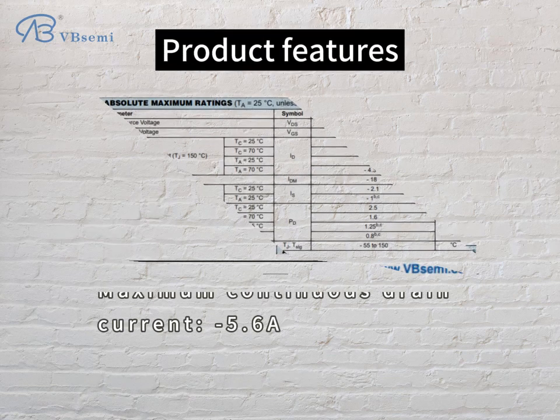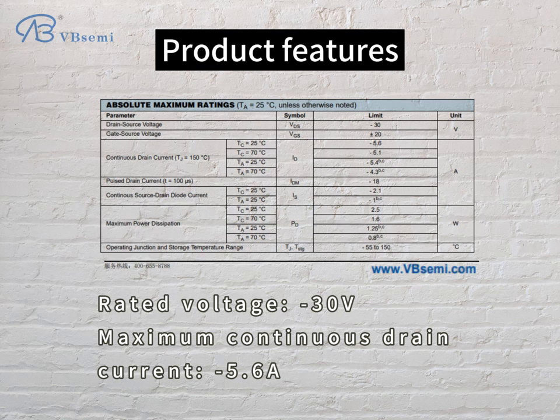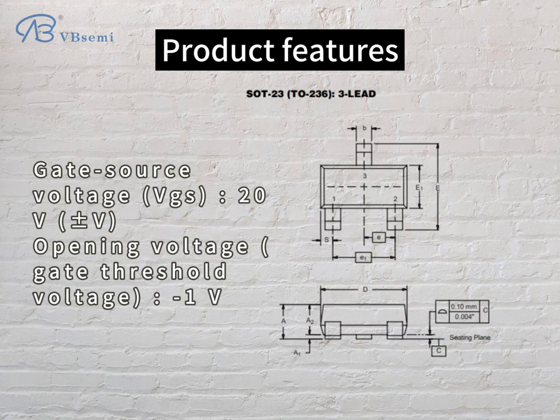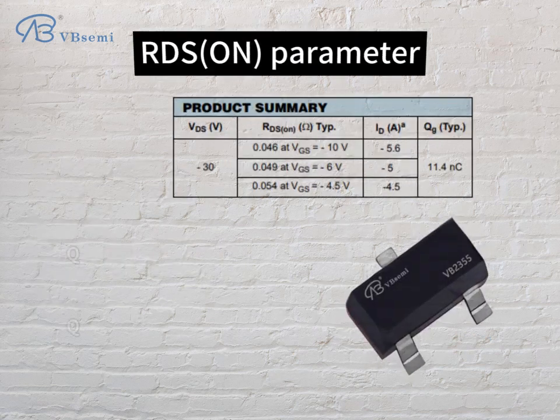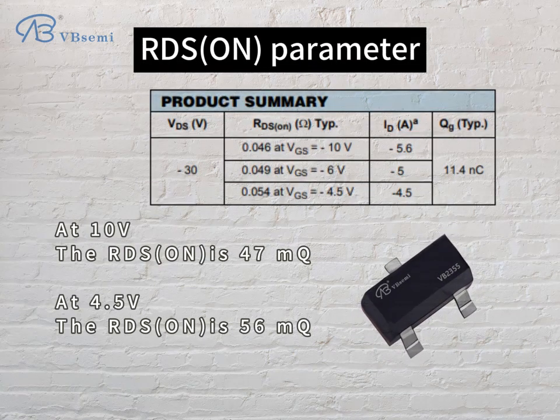Product features: rated voltage minus 30V, maximum continuous drain current minus 5.6A, gate-source voltage VGS 20V, gate threshold voltage minus 1V. RDS(on) parameters: at 10V, RDS(on) is 47 mΩ; at 4.5V, RDS(on) is 56 mΩ.